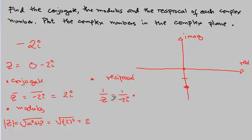The conjugate is 2i. We have 2i over 2i times 2i, which gives us 2i over negative 4, because i squared is negative 1. Two divided by negative 4 is negative one half, so we have negative i over 2. This is your reciprocal.